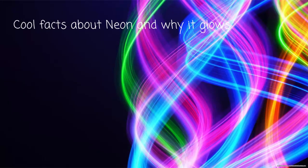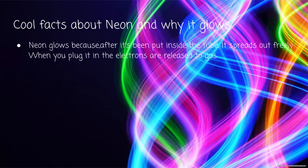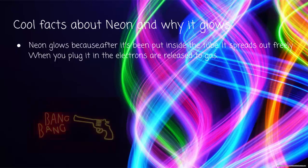Cool facts about NEON and why it glows: NEON glows because after it's been put inside a tube, it spreads out freely, making it glow. The reason it glows is because electrons are put into it and the electrons inside are released to a gas, making it glow. That's what makes signs glow like that sign down there. You can find neon like everywhere, especially in Las Vegas — it's kind of what makes the city light up at night.